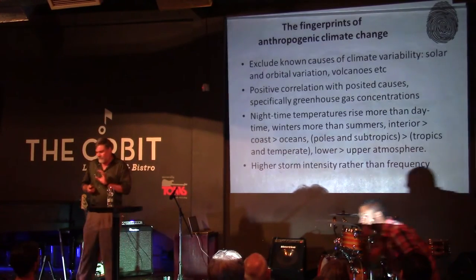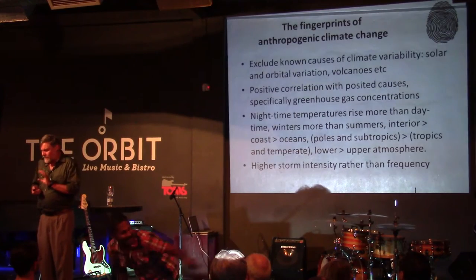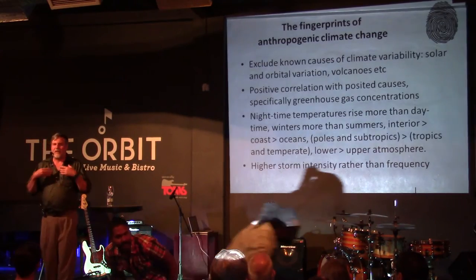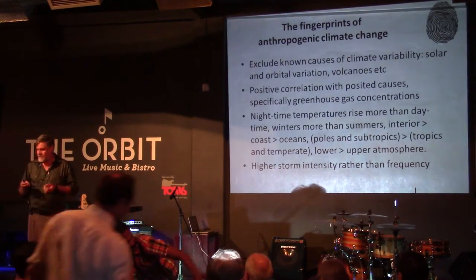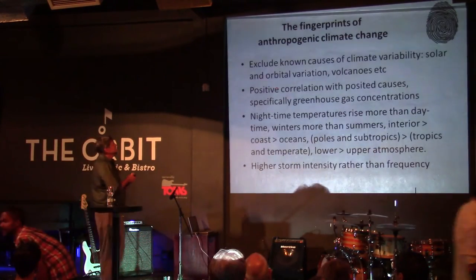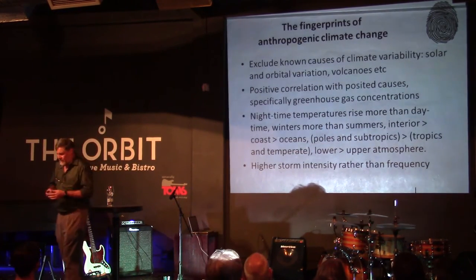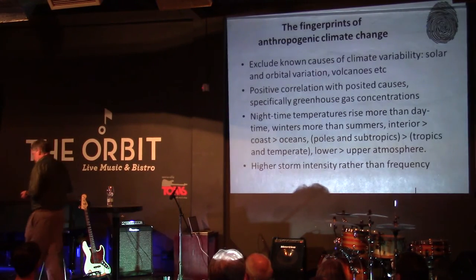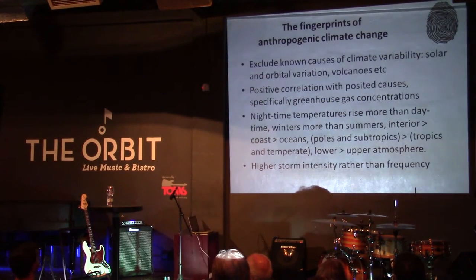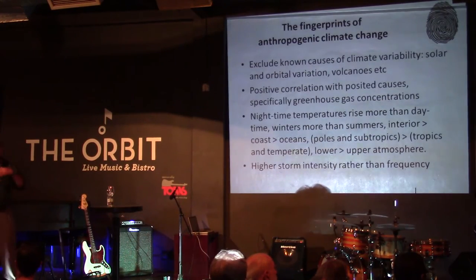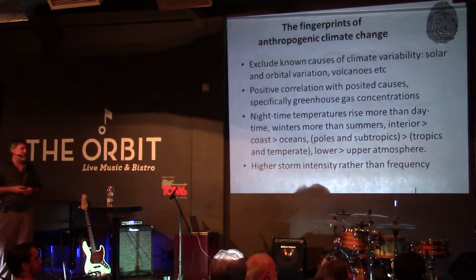In order to do attribution, you really need to identify the unique attributes that would separate a human-caused climate signal from all the other potential causes. The first thing you do is exclude all the known causes. Whenever I give a climate change talk, there's always someone who asks: what about volcanoes? Volcanoes are in. What about Milankovic cycles? Milankovic cycles are in as well. All of that stuff is conserved — it's all built into the models and tested. Everything that we know has a material influence on the climate is conserved.